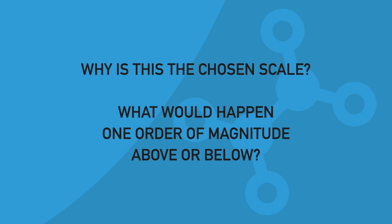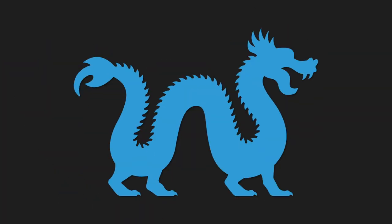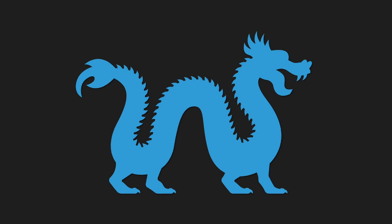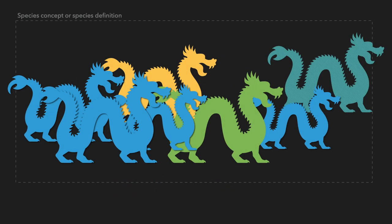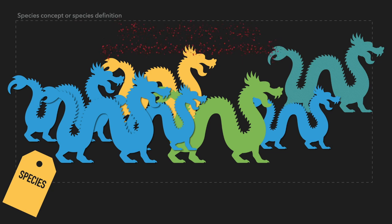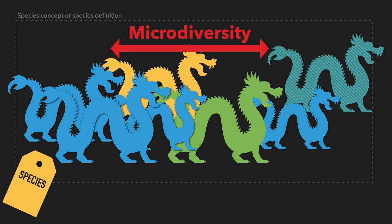Now, let's go back to our individual dragon. As you might imagine, a dragon could have a family and other fellow dragons. All these dragons that are closely related are called a species, and the variation within a species is called microdiversity. And we encounter here an important definition: the species.